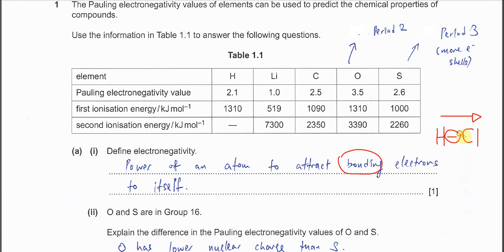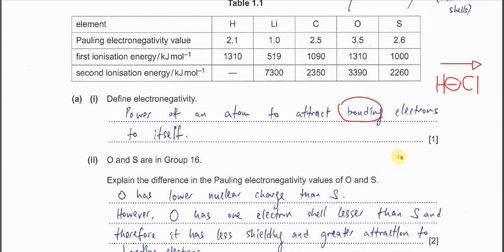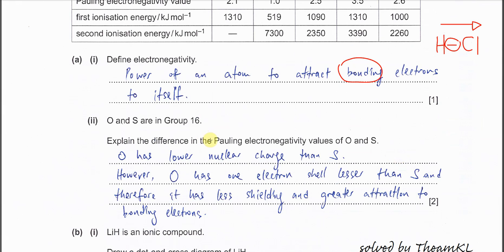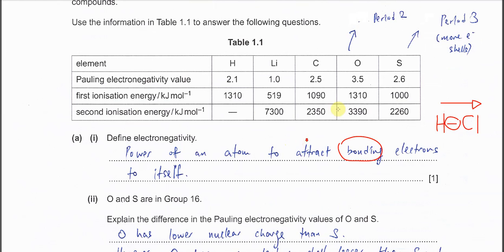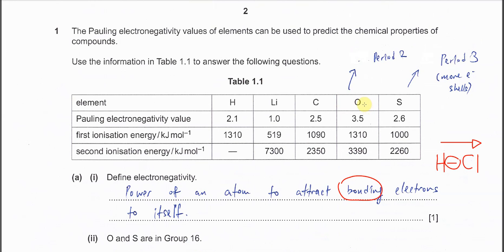Part A(ii): Oxygen and sulfur are in Group 16. Explain the difference in electronegativity. They're in the same group but different periods. Oxygen is Period 2, sulfur is Period 3. The difference is one electron shell - sulfur has one more electron shell than oxygen.